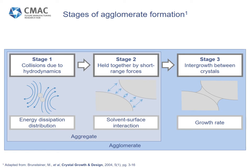Before moving on, I'd like to clarify the terminology I'll be using in this talk as definitions do vary. Here I'm classifying an aggregate as a particle which has only undergone the first two stages, whereas an agglomerate has undergone all three. This inherently means that an agglomerate is stronger and more difficult to break than an aggregate, and it can only occur under supersaturated conditions.